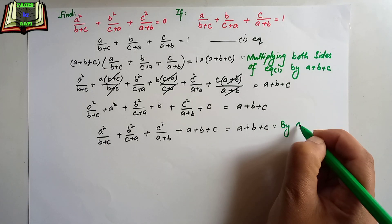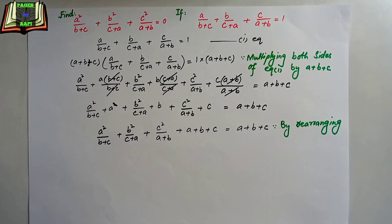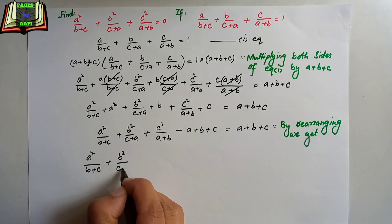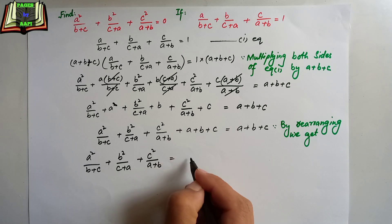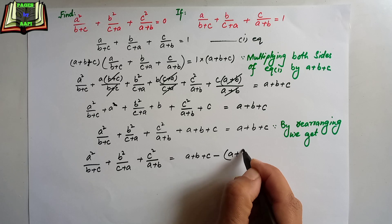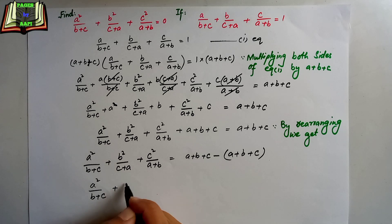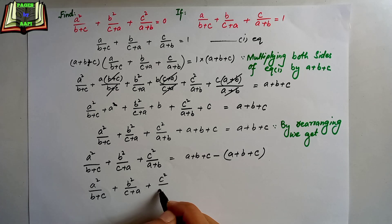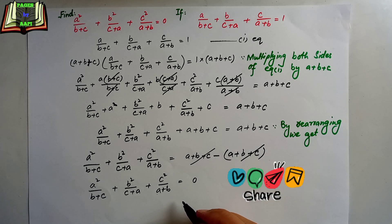By rearranging, a²/(b+c) + b²/(c+a) + c²/(a+b) = (a+b+c) − (a+b+c). So this (a+b+c) is taken to the right-hand side, and on the right-hand side they cancel out, leaving only 0.